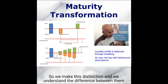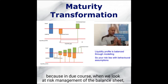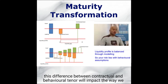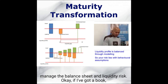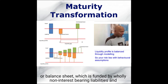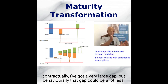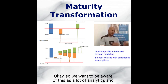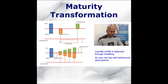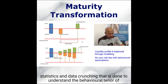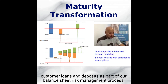So we make this distinction and understand the difference between them, because when we look at risk management and balance sheets, this difference between contractual and behavioral tenor will impact the way we manage the balance sheet for liquidity risk. If I've got a book that is funded by wholly non-interest-bearing liabilities and instant access deposit accounts, and I'm using it to fund mortgages, contractually I've got a very large gap. But behaviorally, that gap could be a lot less. There's a lot of analytics, statistics, and data crunching that is done to understand the behavioral tenor of customer loans and deposits as part of our balance sheet risk management process.